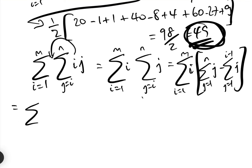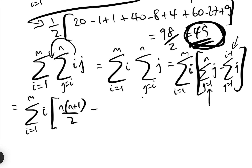That equals the sum between i equals 1 and m of i multiplied by: the sum of the first n natural numbers is n times n plus 1 over 2, and the sum from j equals 1 to i minus 1 of j is the sum of the first i minus 1 natural numbers, which is i minus 1 times i over 2.